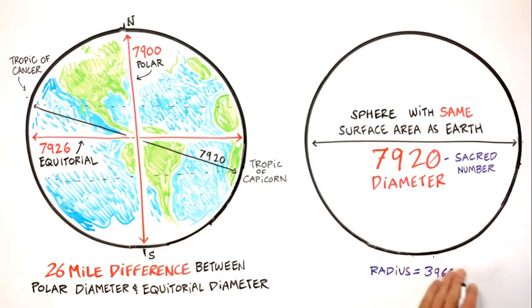So that's the number we use for the Earth. Which means that its radius is half that, or 3,960. And in most books you read, astronomy and so forth, when they're talking in round numbers about the radius or the diameter of the Earth, these are the numbers they use. 7,920 and 3,960.